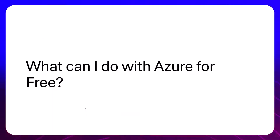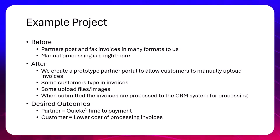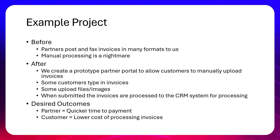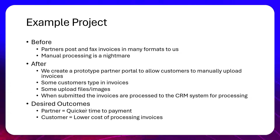What I wanted to do next was talk about what you can do with that free allowance. I was thinking about an example project — a proof of concept that became production, a real-world scenario. Before we started the project, there was an existing process where people would submit invoices in different formats. The manual processing took a lot of time and there was a desire to automate it. We tried to create a prototype partner portal where partners could upload the invoices customers submit to them. Those invoices varied by partner, but the goal was: can we process the invoices and load them into the CRM system? The desired outcome was a quicker time to payment at a lower cost of processing.